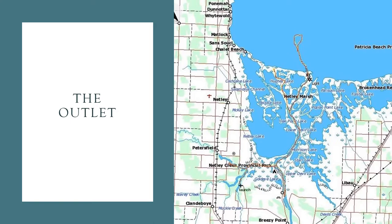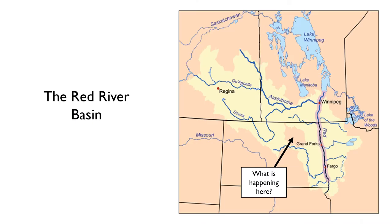The Red River flows north, dividing North Dakota from Minnesota and crossing into Manitoba, Canada near Emerson. The river continues flowing north until it passes by the city of Breezy Point, finally draining into Lake Winnipeg.